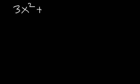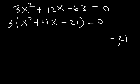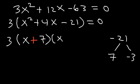Try this one: 3x squared plus 12x minus 63 equals 0. Notice that 3, 12, and 63 are all divisible by 3, so take out the GCF of 3. That gives x squared plus 4x minus 21. Now what two numbers multiply to negative 21 but add to 4? That's 7 and negative 3. So to factor the expression inside, it's x plus 7 times x minus 3. Therefore, x is equal to negative 7 and positive 3.